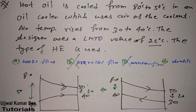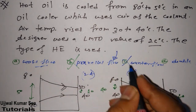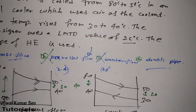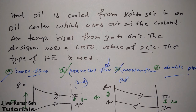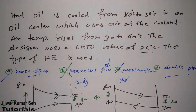As I explained, LMTD for cross flow lies between parallel flow and counter flow. Here, parallel flow gives about 24 degrees and counter flow gives about 28 degrees, so the given LMTD of 26 degrees lies right in between. Therefore, the correct answer is that this is a cross flow heat exchanger. We don't have a direct formula for cross flow LMTD, but this method confirms it. Thanks for watching — please share with friends and subscribe to the channel.